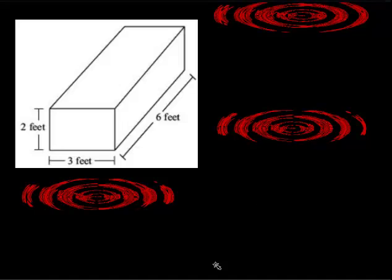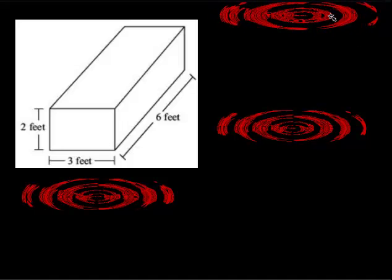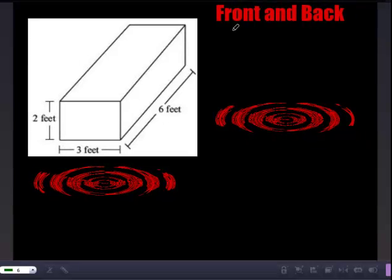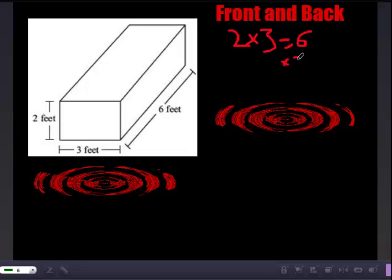So, looking at this shape, this rectangular prism, first, we're going to look at the front and the back. So, the front of it is 2 times 3, which takes care of the front part of it, and the back will be the same thing. So, we times by 2, because there's 2 of them, and get 12.